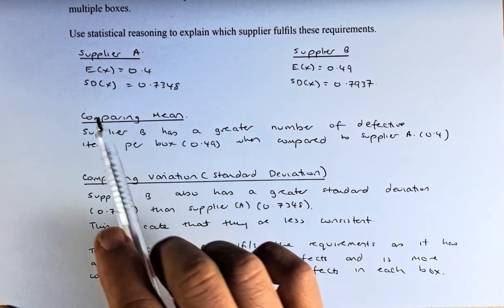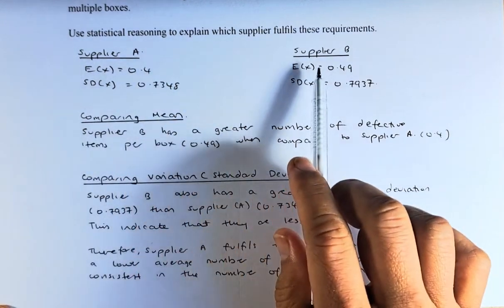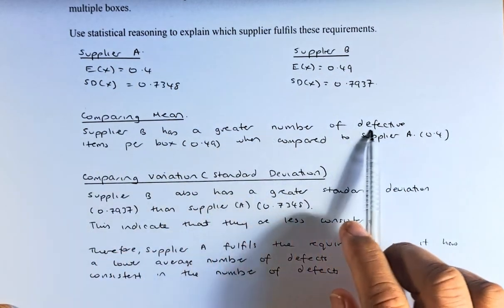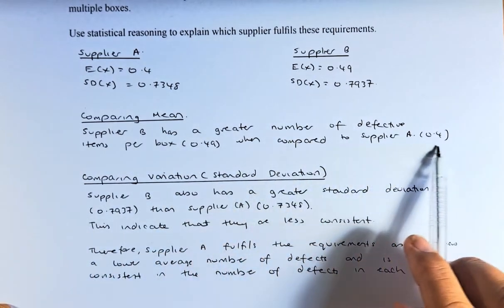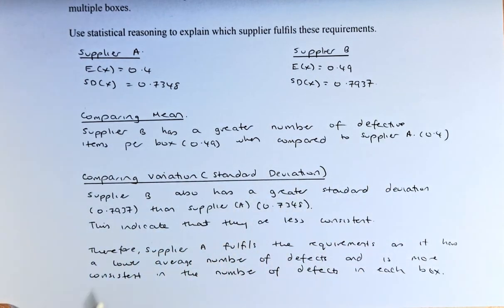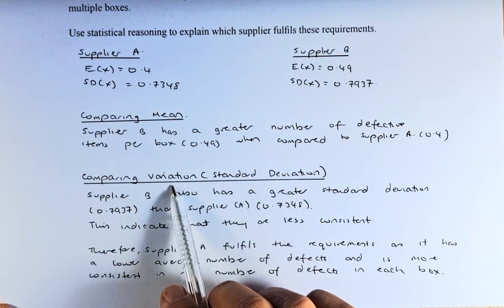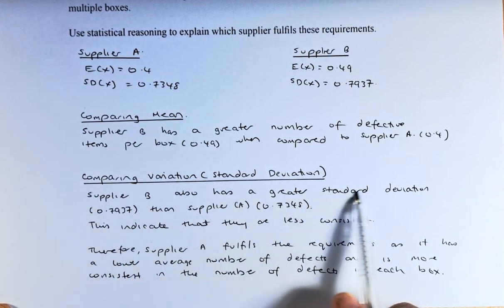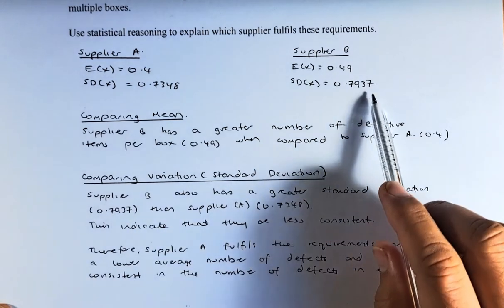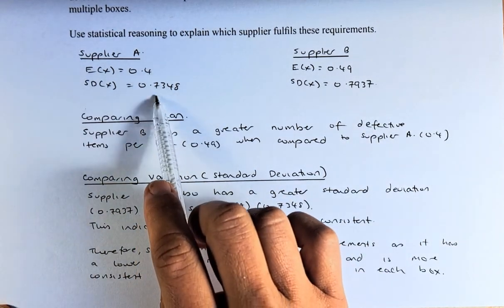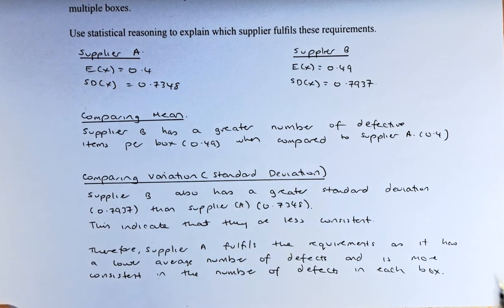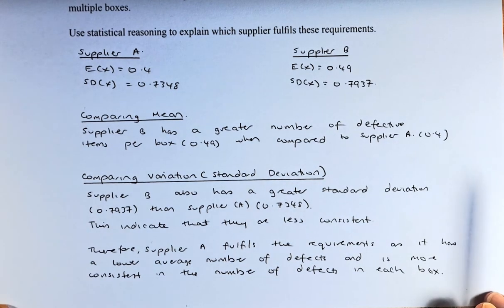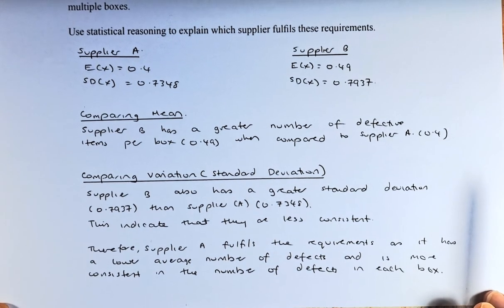Supplier A has a mean of 0.4, Supplier B 0.49. So Supplier B has a higher number of defective items per box, 0.49, compared to Supplier A. Now we are going to compare the standard deviation or variation. Supplier B has a greater standard deviation, which is 0.7937, compared to Supplier A, which is 0.7348. This indicates that Supplier B is less consistent than Supplier A.